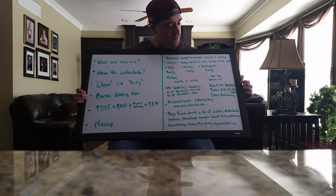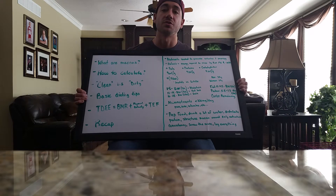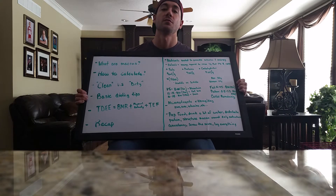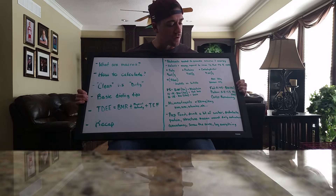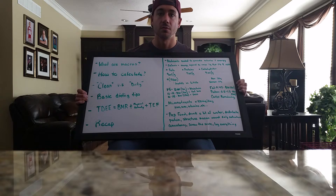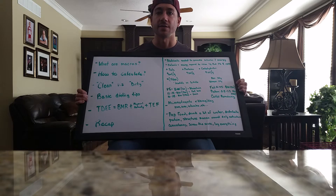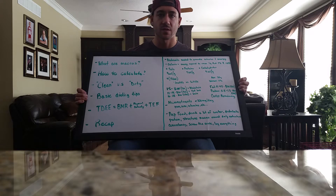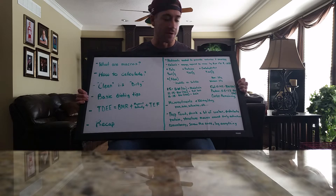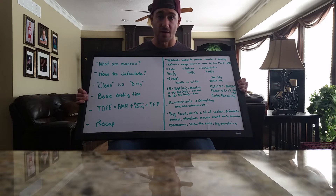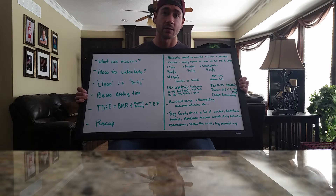Essentially, fats and protein are the two I'd start off with. Get those calculated, and then with whatever remaining calorie values you have, that's where you fill in your carbs. Subtract the fat and protein calories from your TDEE — so subtract from 3,000 — and whatever you have left, divide by 4, and that's how many grams of carbs you'd be eating daily.